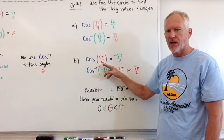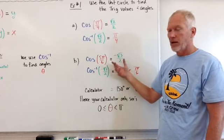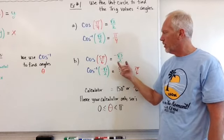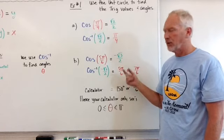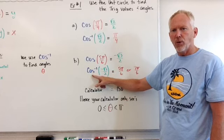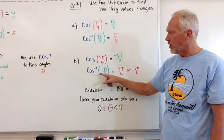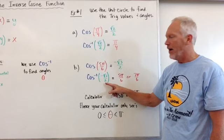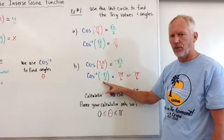Cosine of 5 pi over 6 of the angle, what is the value of the cosine? If you look at your unit circle, it's negative root 3 over 2. If we want to find the angle, we use cosine inverse. The cosine inverse of that same value of the cosine, negative root 3 over 2.